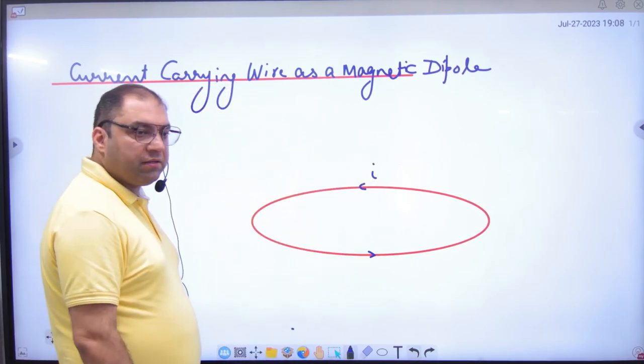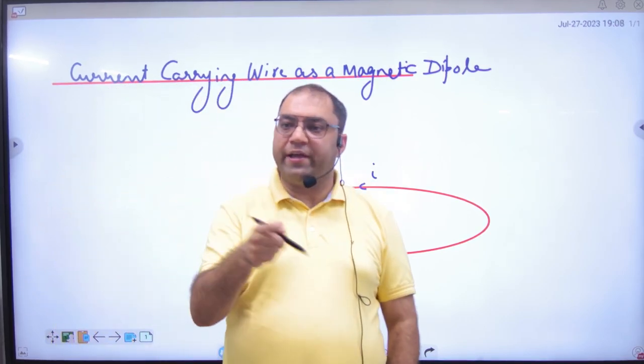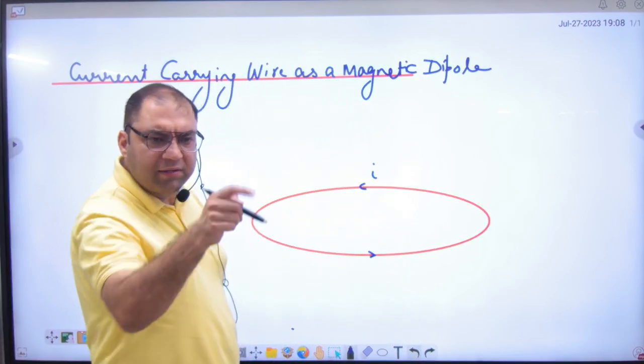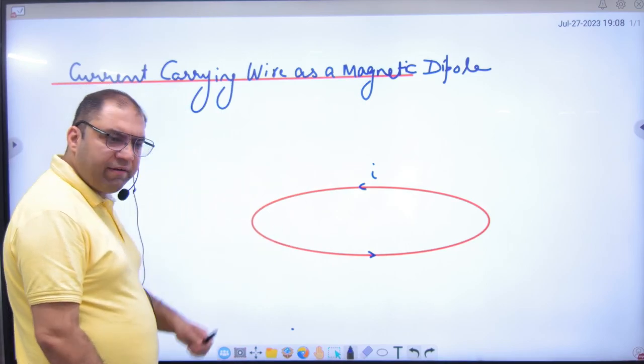Now, someone has said that a current carrying wire is a loop and it works in a magnetic field because it generates magnetic field. How to generate B? You have done it in the center.